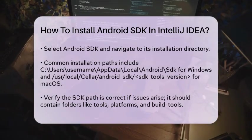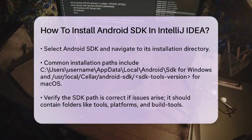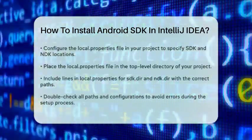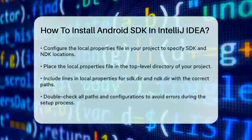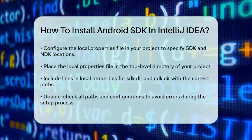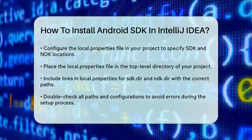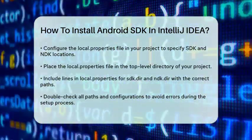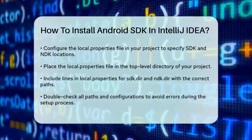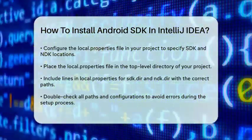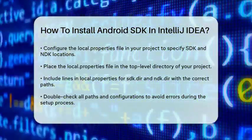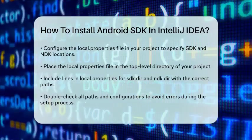Additionally, you might need to configure the local.properties file in your project to specify the SDK and NDK locations. This file should be placed in the top-level directory of your project and should contain lines like sdk.dir=C:\AppData\Local\Android\SDK and ndk.dir=C:\AppData\Local\Android\SDK\ndk-bundle.